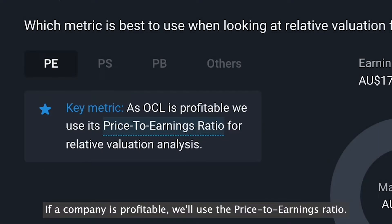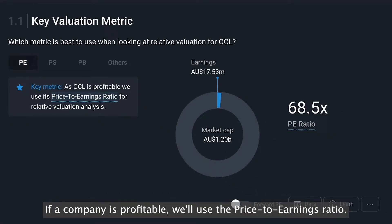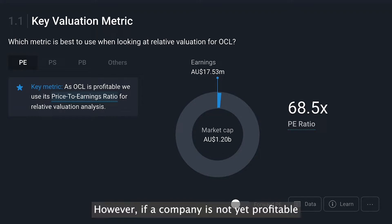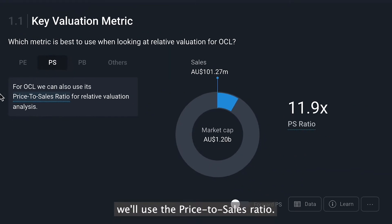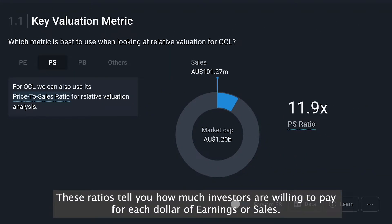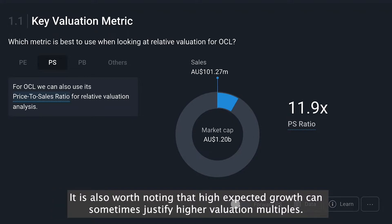If a company is profitable, we'll use the price to earnings ratio. However, if a company is not yet profitable, we'll use the price to sales ratio. These ratios tell you how much investors are willing to pay for each dollar of earnings or sales. It is also worth noting that high expected growth can sometimes justify higher valuation multiples.